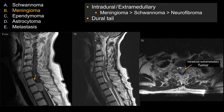You can also see there's a dural tail. If you take this homogeneously enhancing lesion with a dural tail and put it in the brain, it looks exactly like what you'd expect to see with meningioma. Certainly, a dural tail is not pathognomonic just for meningioma, but it makes meningioma a better choice over schwannoma in this case.